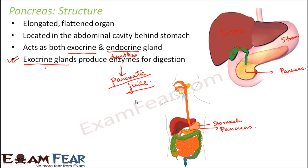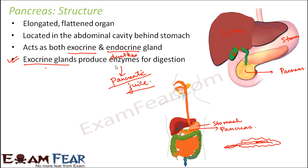The pancreatic juice is released into ducts. If you look at the structure of the pancreas, you can see a tube-like structure through which whatever it secretes flows — these are the ducts. The cells secreting pancreatic juice are the exocrine glands. As for the endocrine function, certain cells release hormones directly into the bloodstream.